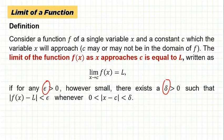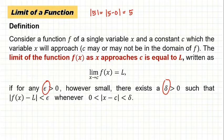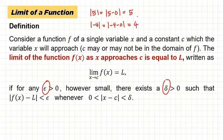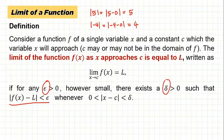The absolute value of f(x) minus L is less than epsilon. Recall that absolute value denotes distance. For example, the absolute value of 5 equals the distance of 5 from 0, which is 5. Similarly, the absolute value of negative 4 equals the distance between negative 4 and 0, which is 4. So absolute value just denotes distance. In this case, the distance between f(x) and L is less than epsilon — meaning the distance is very small.